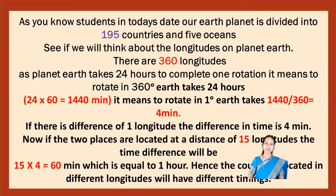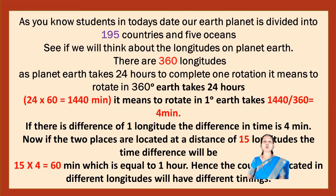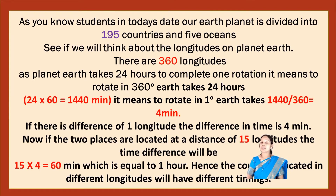As you know, students, our earth is divided into 195 countries and 5 oceans. If we think about the longitudes on planet earth, there are 360 longitudes. As the planet earth takes 24 hours to complete one rotation — to rotate 360 degrees, earth takes 24 hours. So 24 multiplied by 60 equals 1440 minutes. To rotate 1 degree, earth takes 1440 divided by 360 — that is 4 minutes.